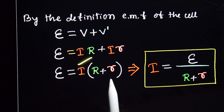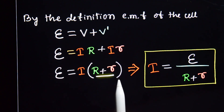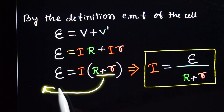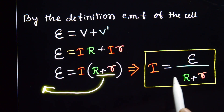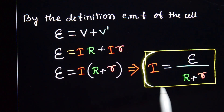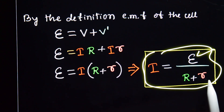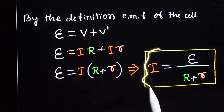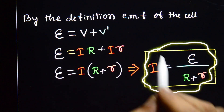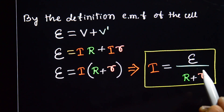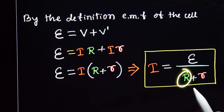Taking I as common, we get I into bracket R plus r. Moving this to the denominator, we get I is equal to E divided by R plus r. This is the expression for current drawn by external resistor R.